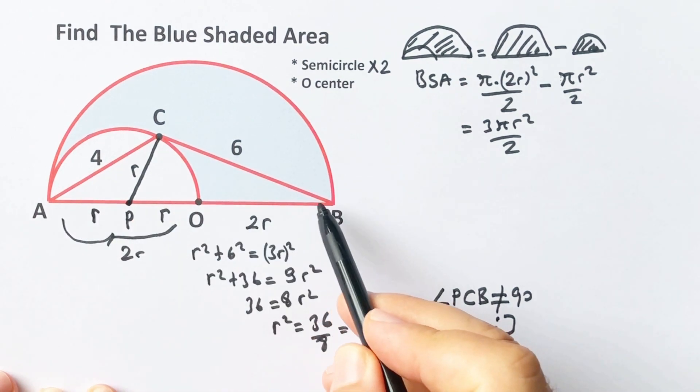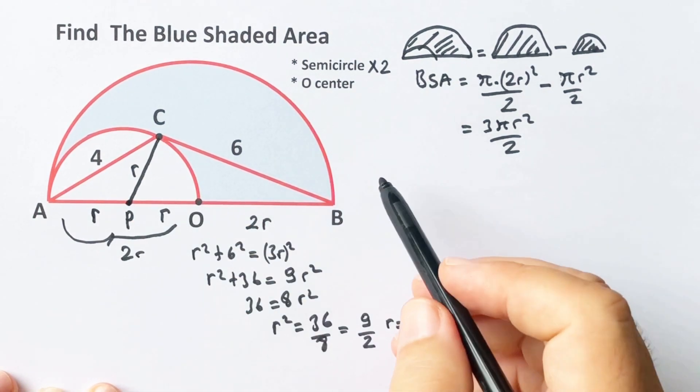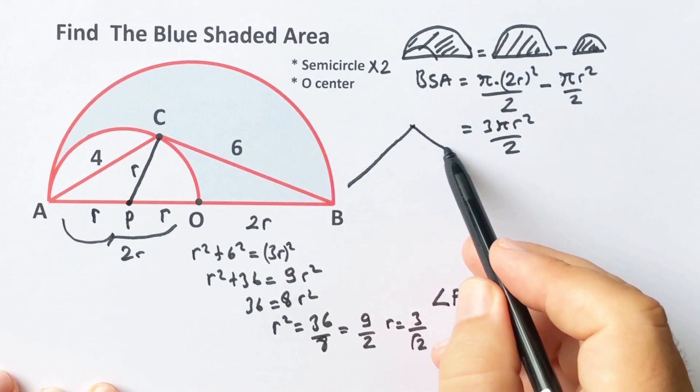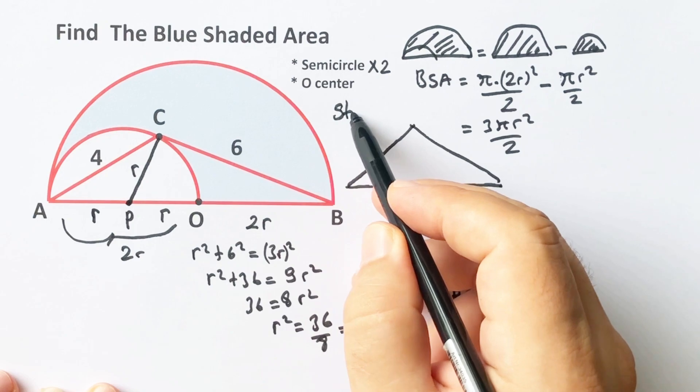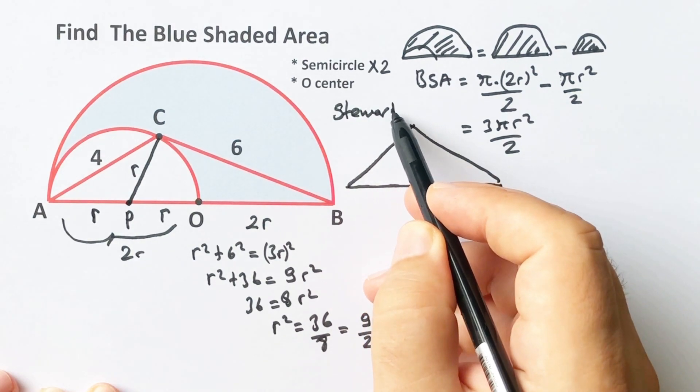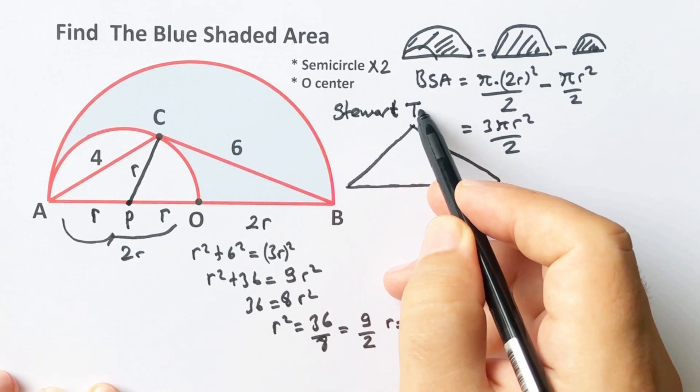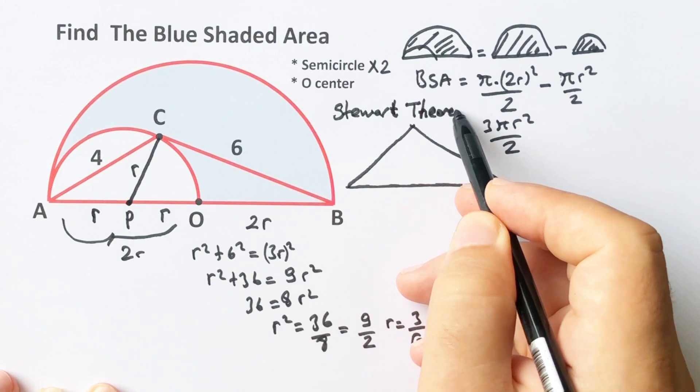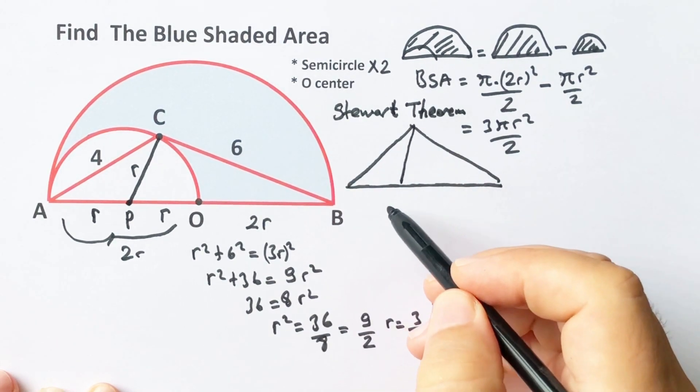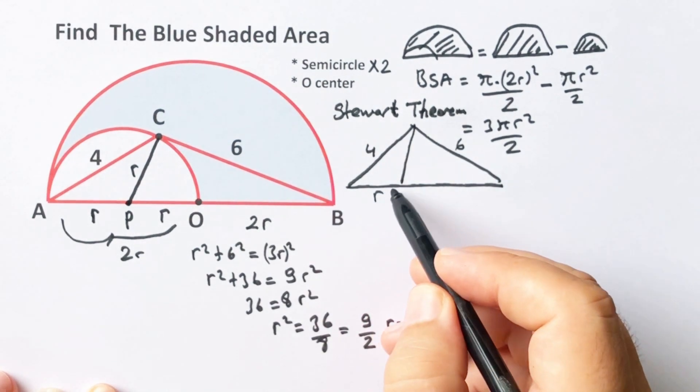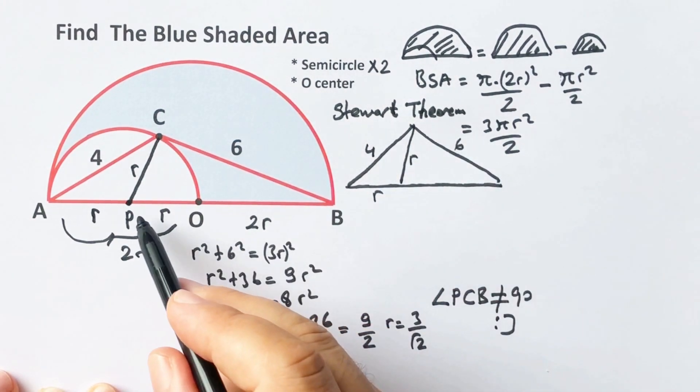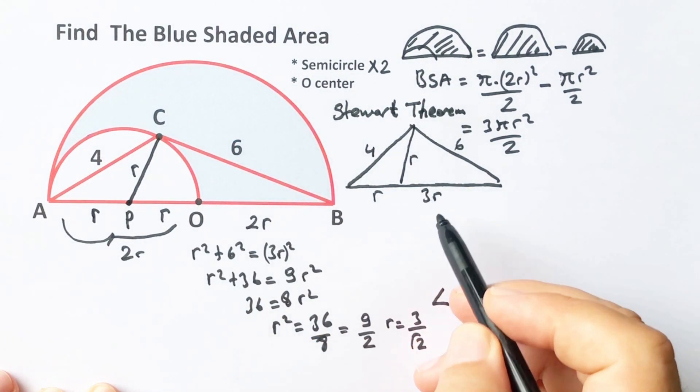If you focus on ACB triangle, we can apply Stewart's theorem, right? According to Stewart's theorem, here is 4, here is 6, and these are r. This length is 3r.